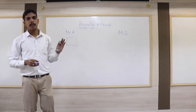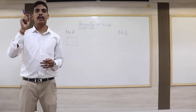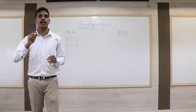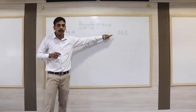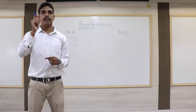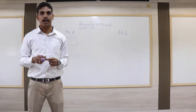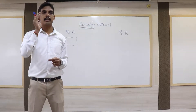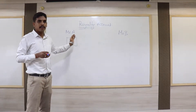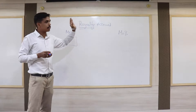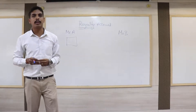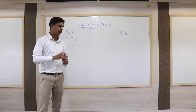Let us take another example. Mr. B is a manufacturer and Mr. A wants to manufacture the same product as Mr. B. So Mr. A approaches Mr. B and requests the right to manufacture that product, and for that he is ready to pay some amount. The amount paid by Mr. A to Mr. B for manufacturing the goods is called Royalty — that is another type of royalty called patent royalty.